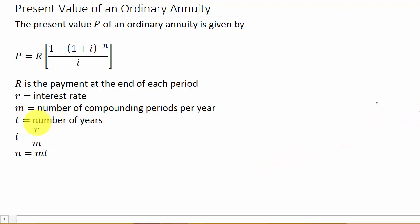And then T represents the number of years. Notice in the formula we have I and N. Well, I is R over M, and N is M times T.